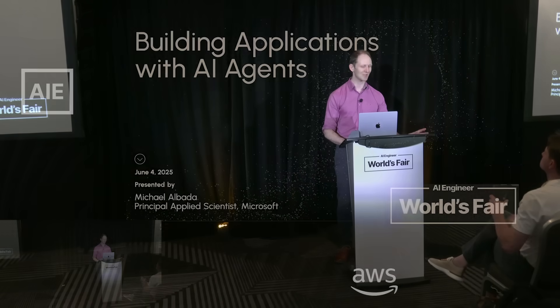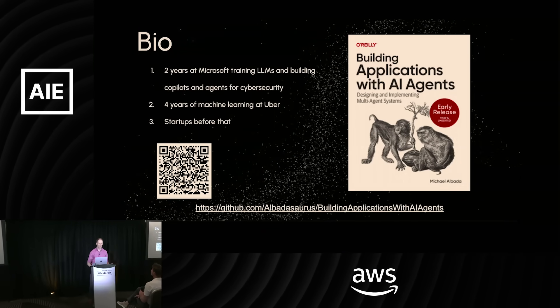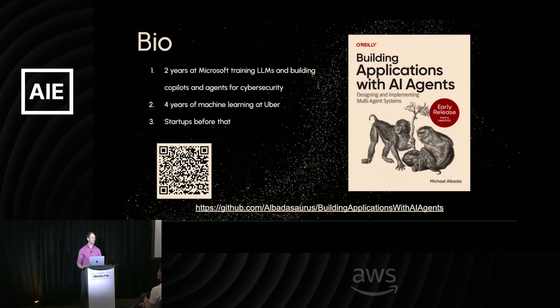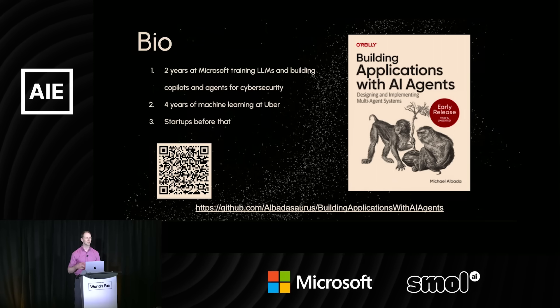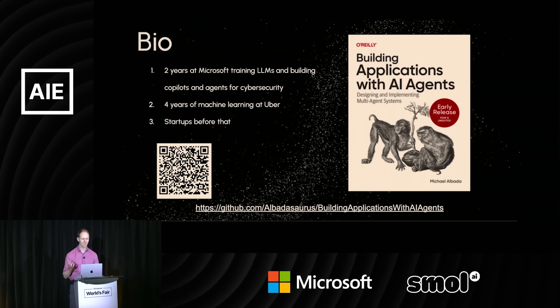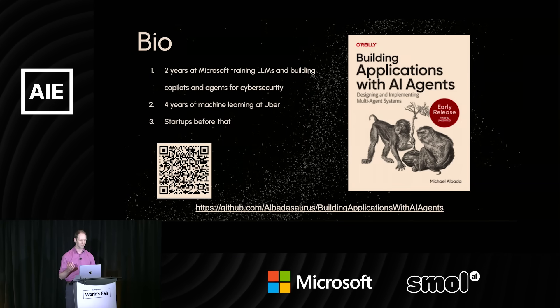It's a pleasure to be with you today. My name is Michael Albada and I'm a principal applied scientist at Microsoft. Today I'm going to be presenting on building applications with AI agents. I've been at Microsoft for about two years, and I've been one of the key contributors to Security Copilot and the recently announced Security Copilot agents, specifically working in the cybersecurity division.